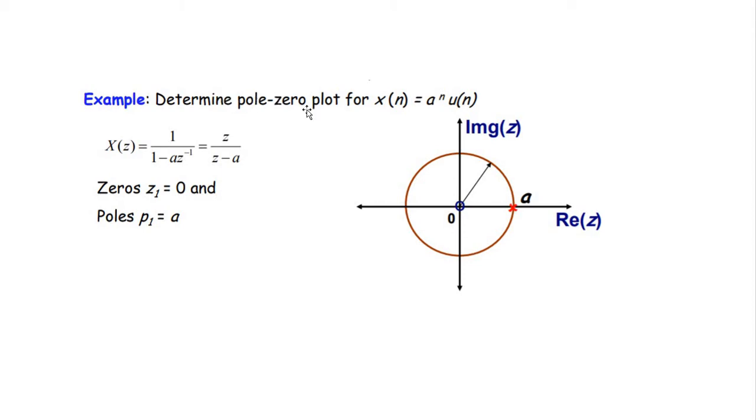Our example would be this: Determine the pole-zero plot for x(n) equals a^n times u(n).